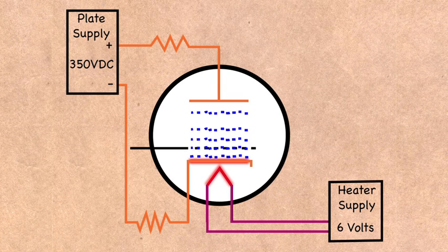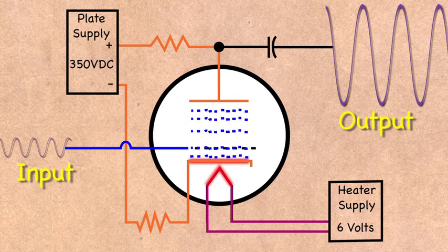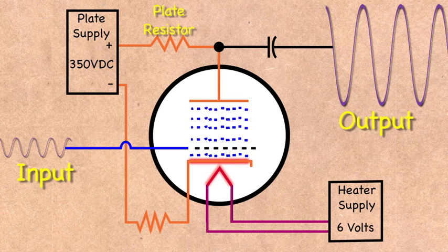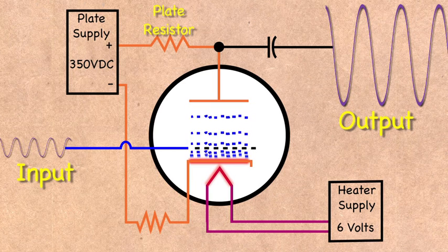The control grid intercepts these flowing electrons and, with a small input signal, can control the flow of electrons to the plate. The change in the number of electrons alters the current flow and the voltage drop across the plate resistor. This results in an amplification of the grid's input signal at the tube's plate.